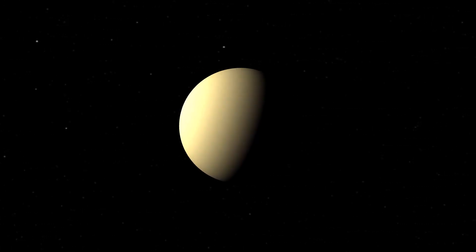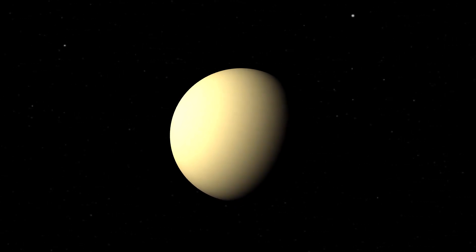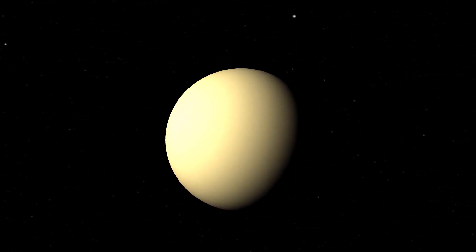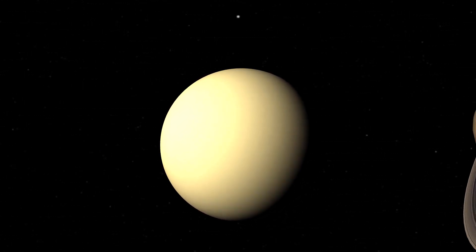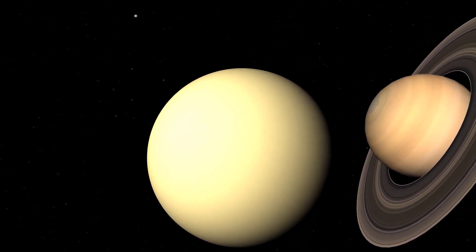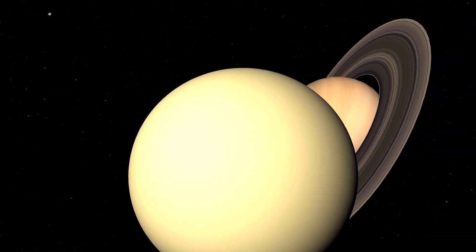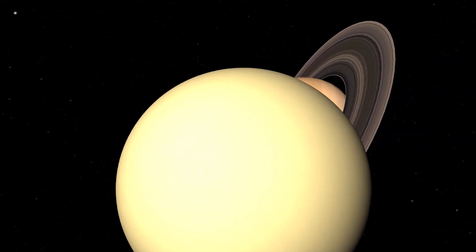Titan is very interesting to scientists because it has a thick nitrogen atmosphere, among other things. Despite the fact that Titan is a natural satellite of Saturn and exhibits only about a tenth of Earth's gravity, the atmospheric pressure at the surface is about 1.6 times that of Earth at sea level.